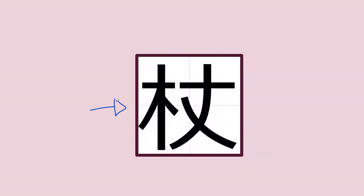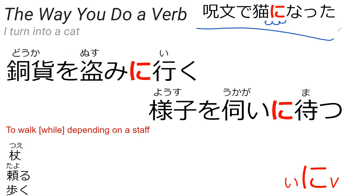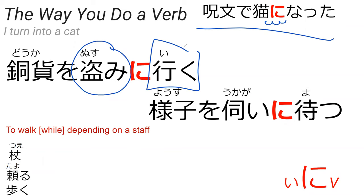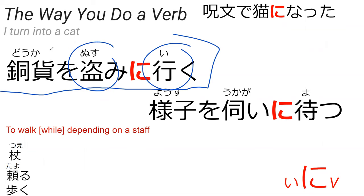Do you happen to remember what this kanji was? We saw it a second ago. This is 杖 — tsue. Do you know what tsue means? A cane, a stick. Perfect. So the particle に can help tell you the way you do a verb. As I said, my favorite example is 'with a spell I became a cat.' You can also use this with the stem form of a verb to tell you the way you do a different verb — almost like the reason. For example, 魔導石を盗みにいく means 'to go to steal a magical stone.'